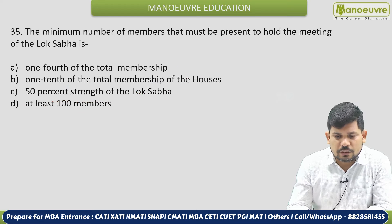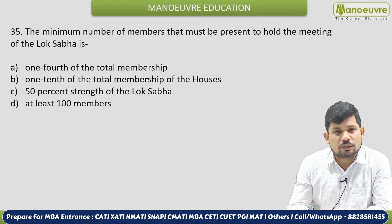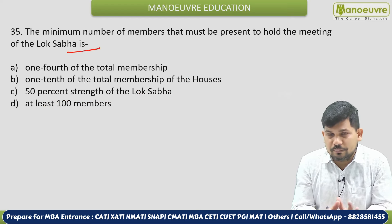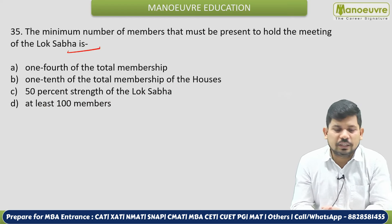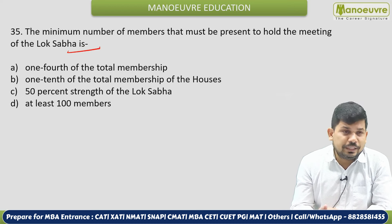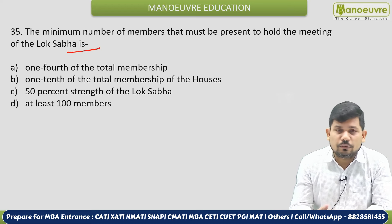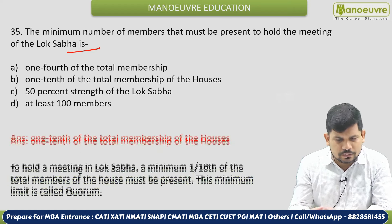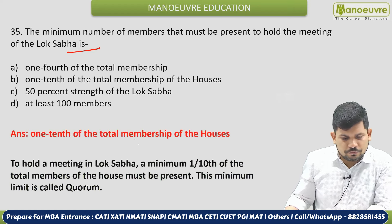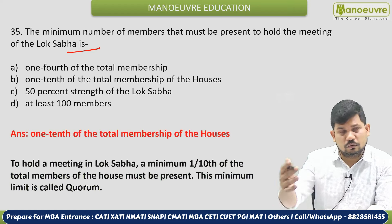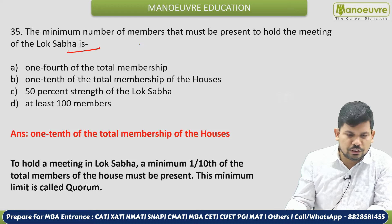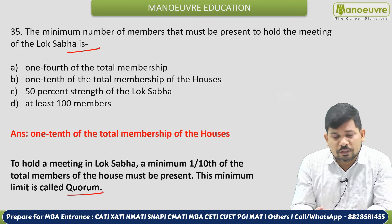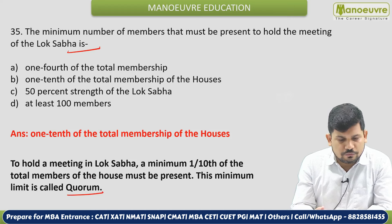Next: What is the minimum number of members that must be present to hold a meeting of the Lok Sabha? This means the quorum — the minimum number of members of parliament required. The answer is at least 10% or 55 members must be present to conduct the session.